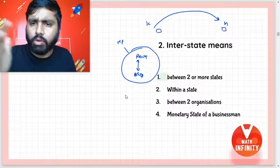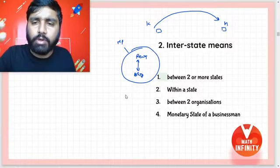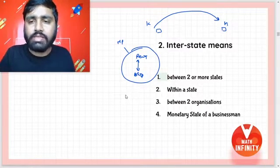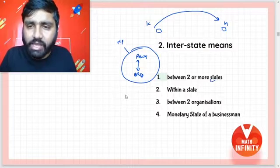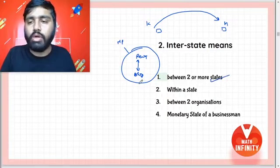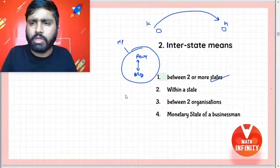The answer is: between two or more states. Within a state means intrastate, but here it is between Jaipur and Kolkata — two different states — so it is interstate. It is between two or more states. It is very simple. You should know it.